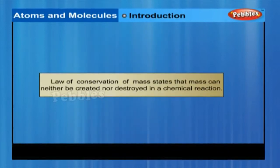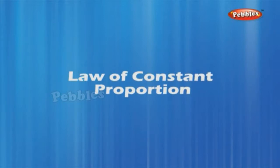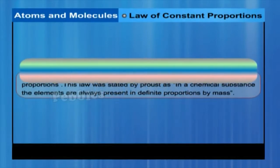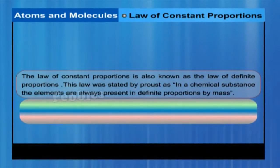The Law of Conservation of Mass states that mass can neither be created nor destroyed in a chemical reaction. The Law of Constant Proportions, also known as the Law of Definite Proportions, was stated by Proust as: in a chemical substance, the elements are always present in definite proportions by mass.